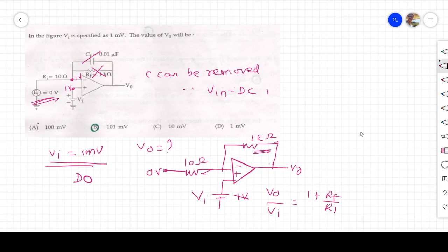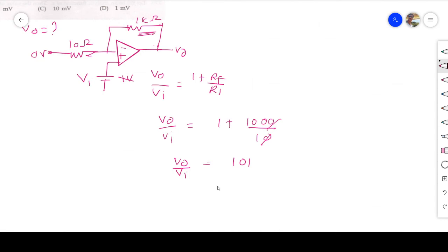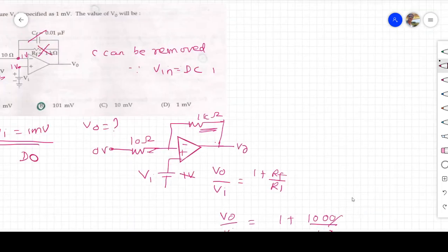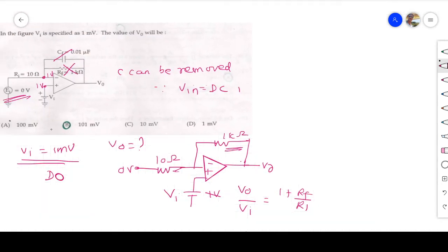What is the V_I given? V_I is 1 millivolt. So V_O is equal to V_I into 101. 101 into V_I is 1 millivolt, that is equal to 101 millivolt. What is the option? Our option B is the correct answer. I hope you understand both the problems very clearly. If you are having any doubt, please ask me in comment section. I will clarify all your doubts. Thank you.